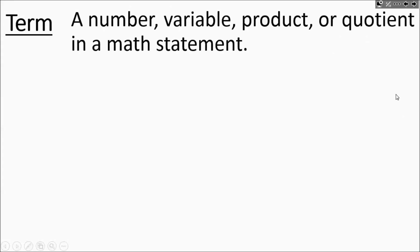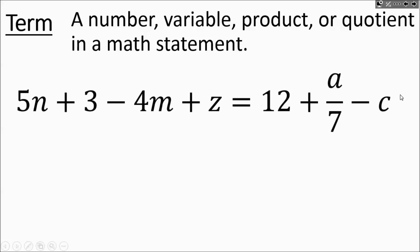Now we'll get into the parts of math statements. The first thing to talk about is terms. Terms can be numbers, variables, a product, or a quotient in a math statement. I'm going to give you a large math statement with all sorts of things going on — these are all terms. Be careful: some students might count the 5 and the N as separate terms, but pay attention to what we're about to do. Numbers by themselves are terms — notice I'm including the sign in front.